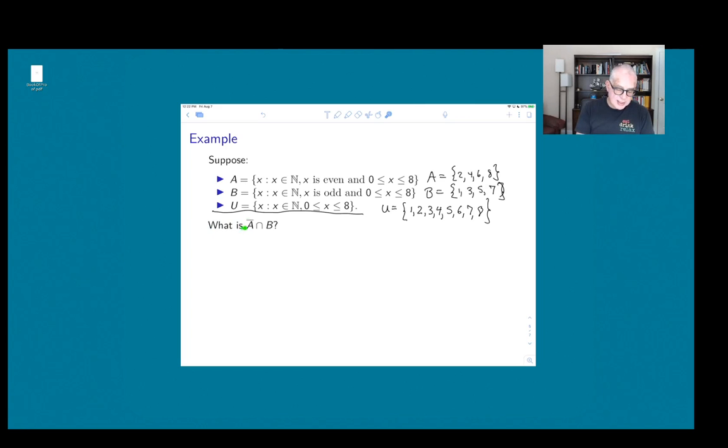So the question we're asked is, what is Ā intersect B? So Ā, relative to this universal set, is U minus A. So it's the collection of things that are in U, but not in A. So in U, but not in A. So let's see, 1 is in U, but not in A. 2 is in A, so that doesn't count. 3 is in U, but not in A. 4 doesn't count. 5 is in U, but not in A. And then 6 is in U, but it is in A, so we don't want that. So we're just left with 1, 3, 5, and 7.